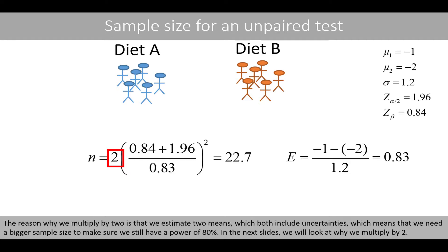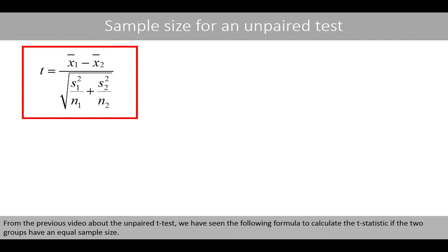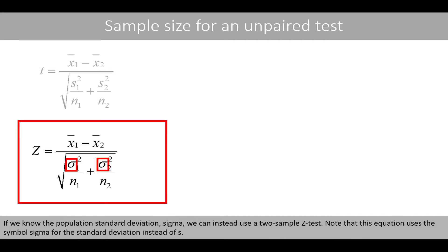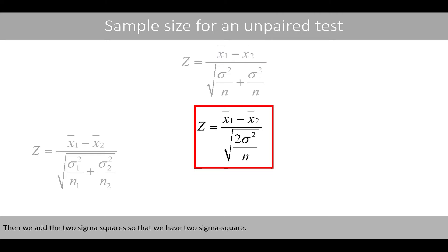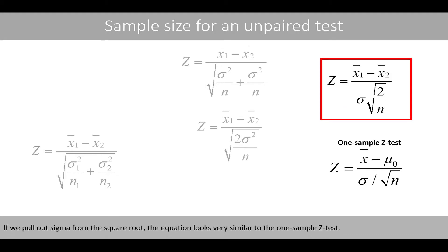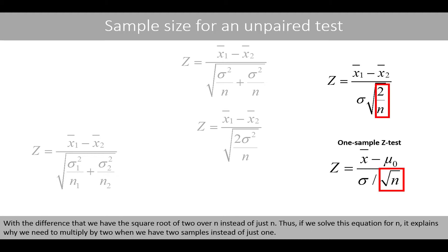In the next slides, we will look at why we need to multiply by 2. From the previous video about the unpaired t-test, we have seen the following formula to calculate the t-statistic if the two groups have an equal sample size. If we know the population standard deviation sigma, we can instead use a two-sample z-test. Note that this equation uses the symbol sigma for the standard deviation instead of s. If we assume that the two groups have equal standard deviation and sample size, we only need the notation sigma and n. Then we add the two sigma-squares so that we have 2-sigma-squared. If we pull out sigma from the square root, the equation looks very similar to the one-sample z-test, with the difference that we have the square root of 2 over n instead of just n. Thus, if we solve this equation for n, it explains why we need to multiply by 2 when we have two samples instead of just one.